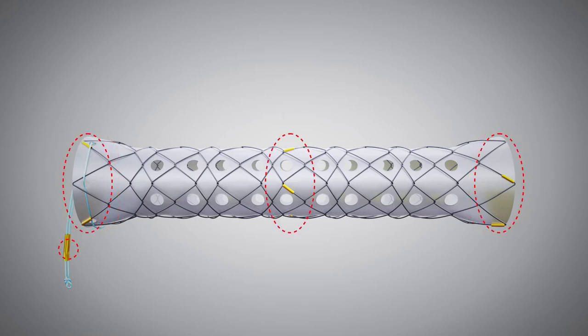There are 12 radiopaque markers on the stent body and one on the lasso for fluoroscopic guidance. A lasso on the proximal end is for repositioning and removal of the stent.